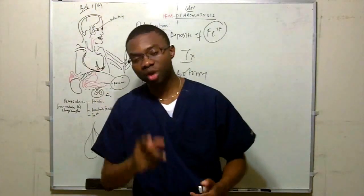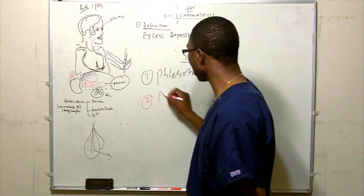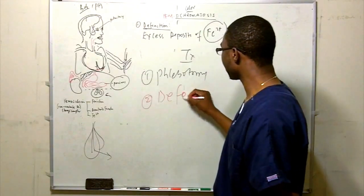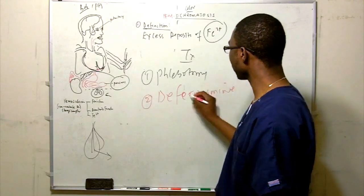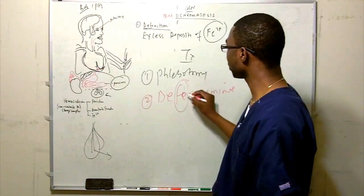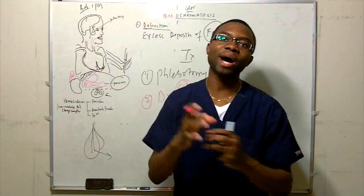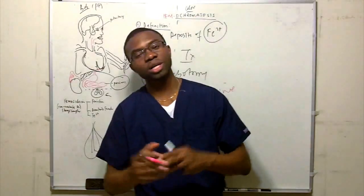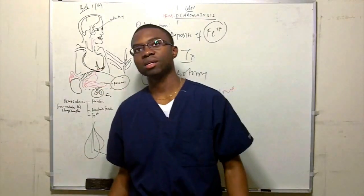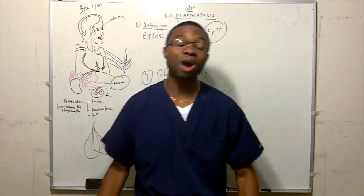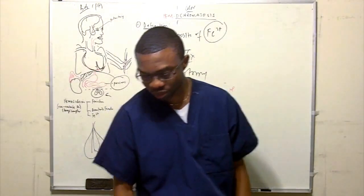They come in every two to three months to give blood, or weekly until their iron levels drop down. Another drug you can give is deferoxamine — it's an iron-binding agent. You give them this drug, it binds to the iron, and they excrete it out of their body. That's how we treat hemochromatosis.